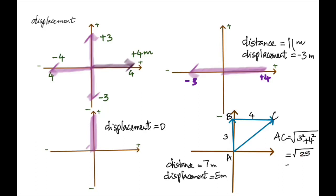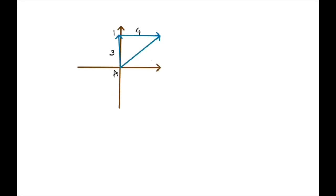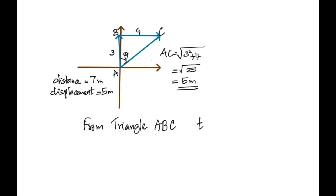Now I'm asking you to find the angle, because when you're asked to find the displacement you have to give a direction. Go ahead, find that angle from the triangle. Using tan from triangle ABC: tan θ = 4 over 3.